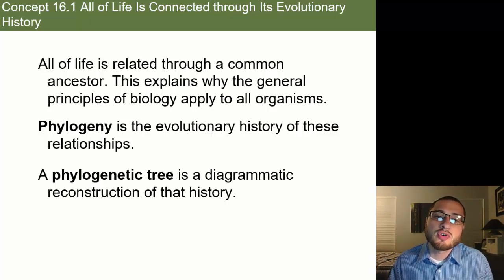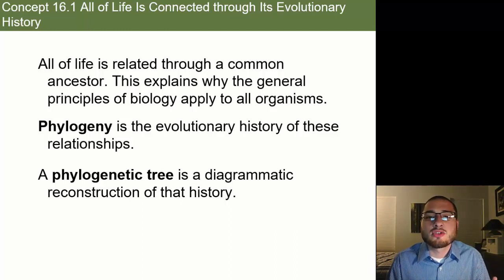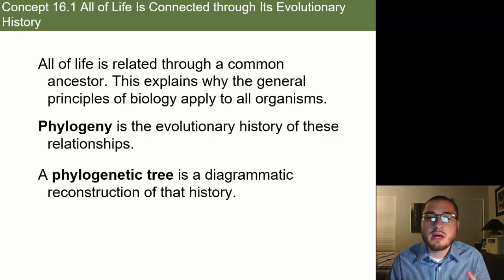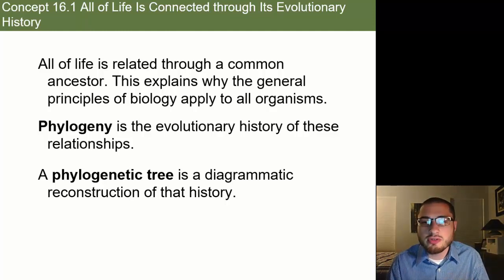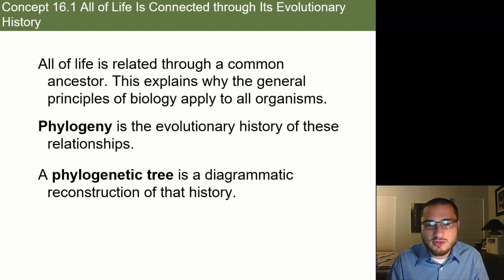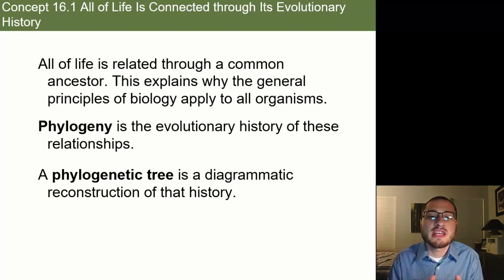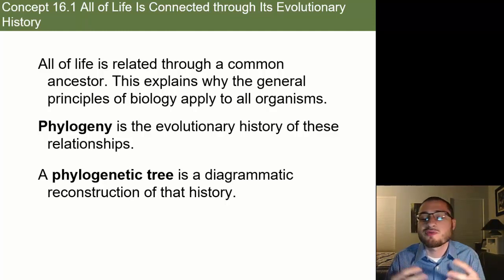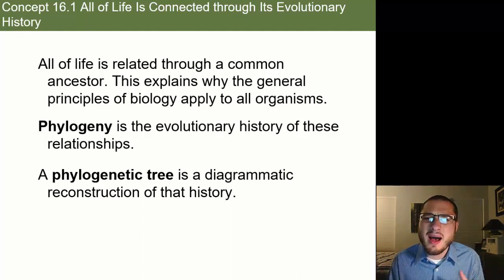Welcome back. Today we're going to talk about phylogeny. Phylogeny is really talking about setting up diagrams for evolution. All of life is related through a common ancestor. If we go back and talk about the history of life on Earth, it all started as a single-celled organism, and then over time those single-celled organisms became multicellular organisms, and those multicellular organisms started to differentiate and have different types of cells and different tissues, and those tissues formed organs.